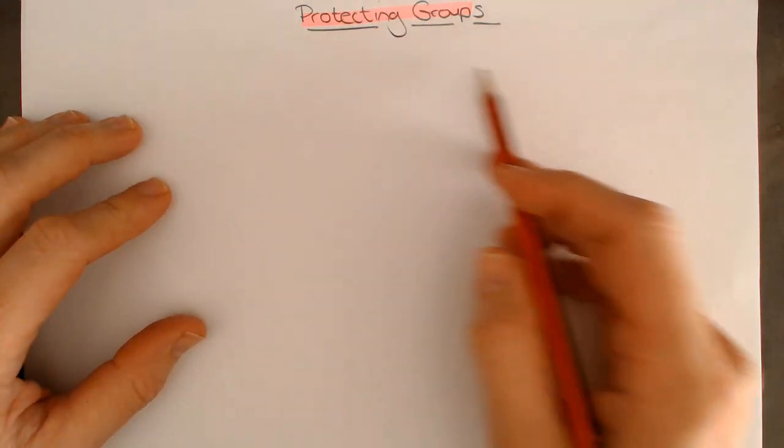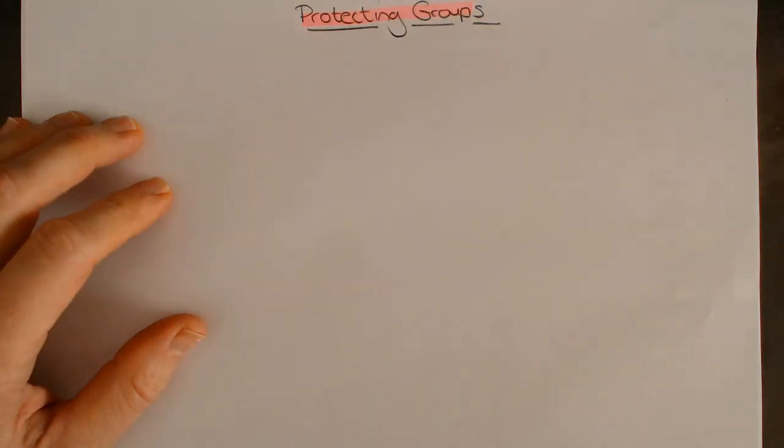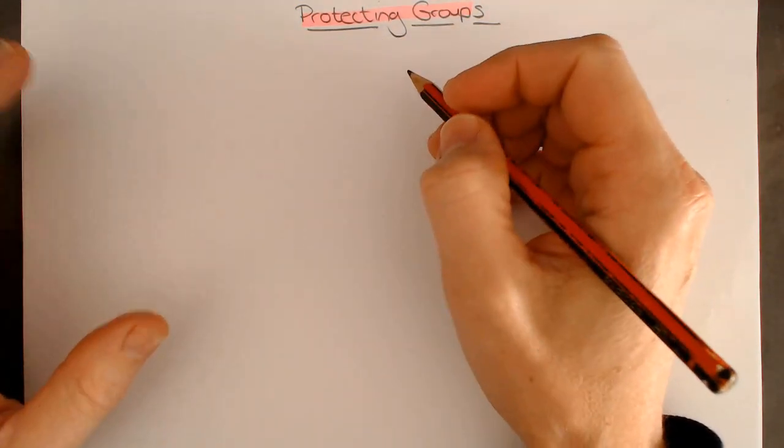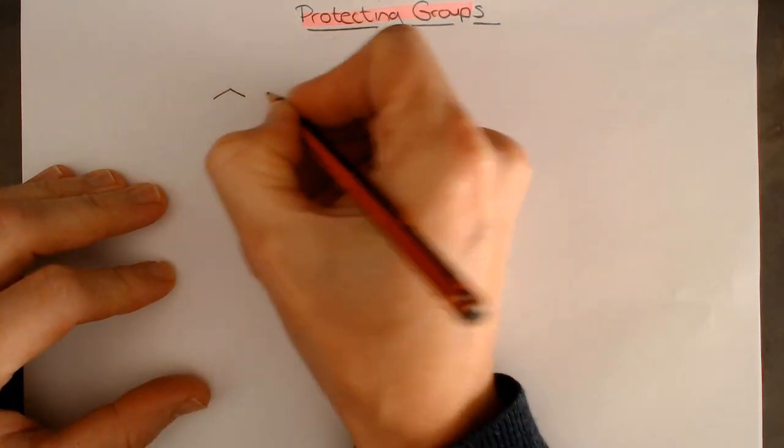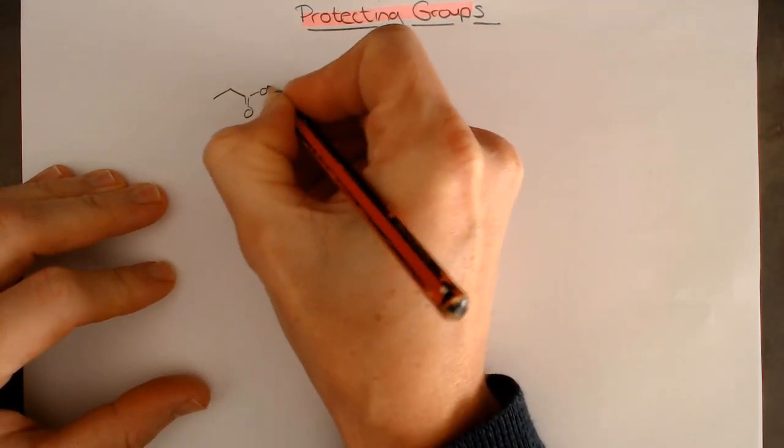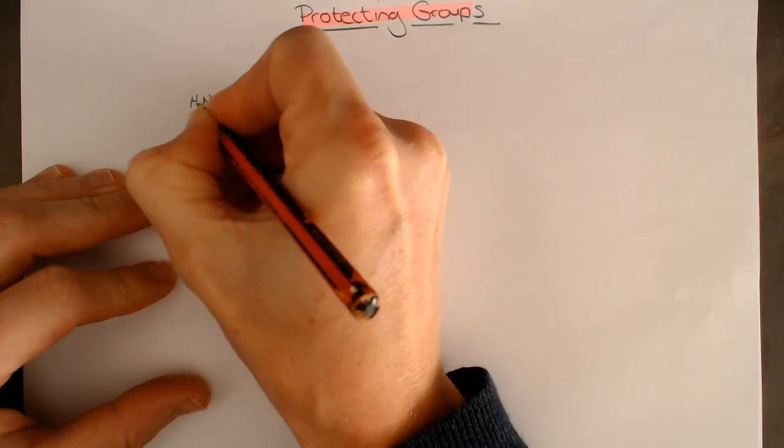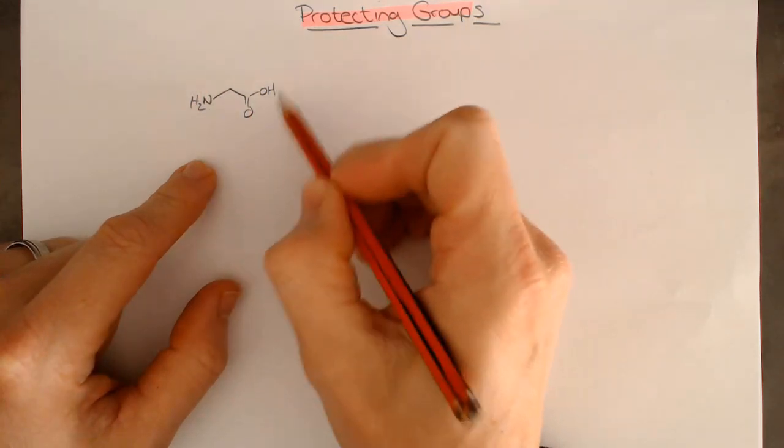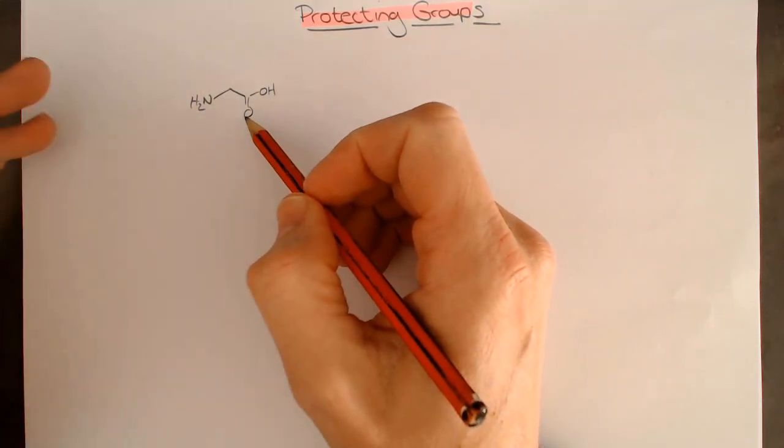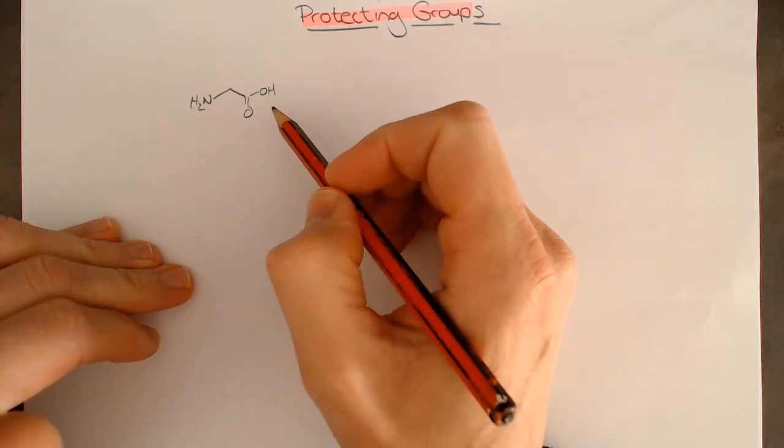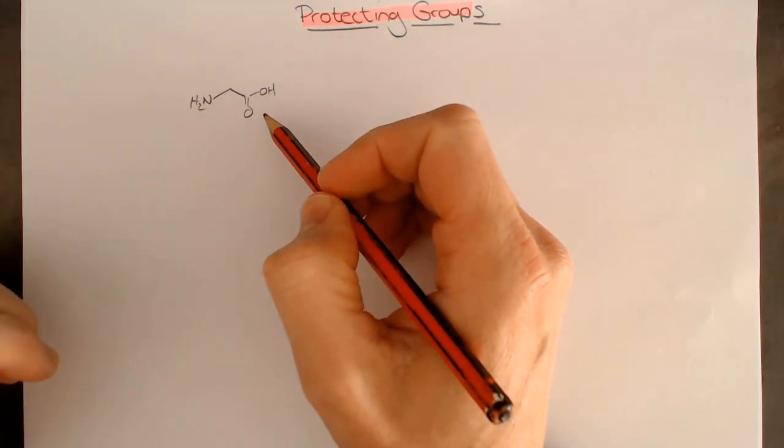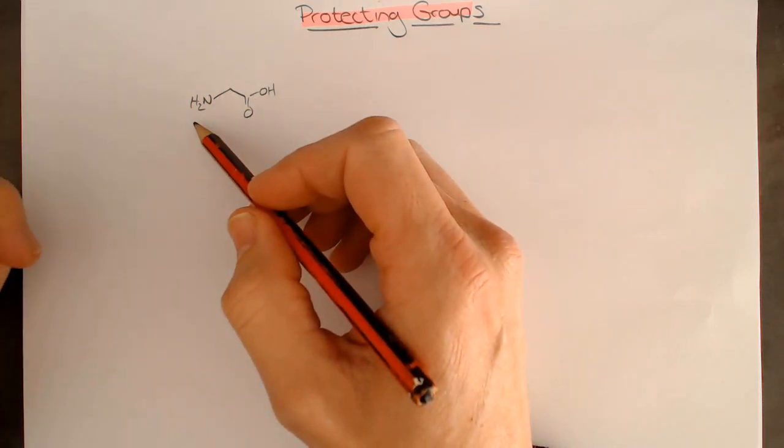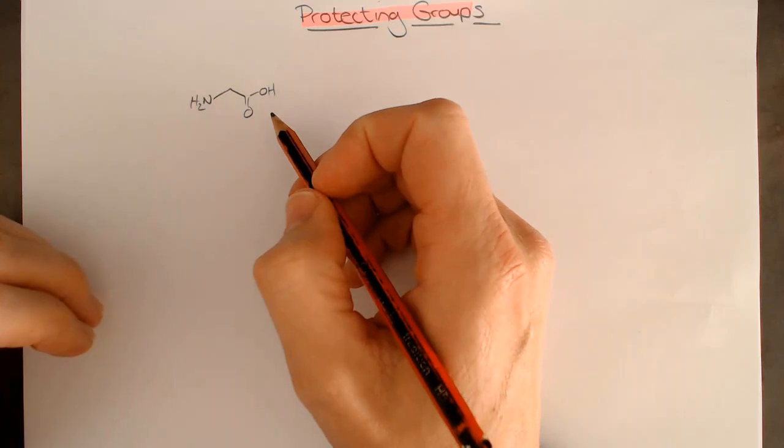This really hits at the heart of organic synthesis and what we're able to achieve. Looking at an amino acid like glycine with an amine and a carboxylic acid, if we wanted to start doing reactions on a molecule like this, the problem is we've got two different functional groups that have reactivities that are not complementary. They're going to start causing problems.